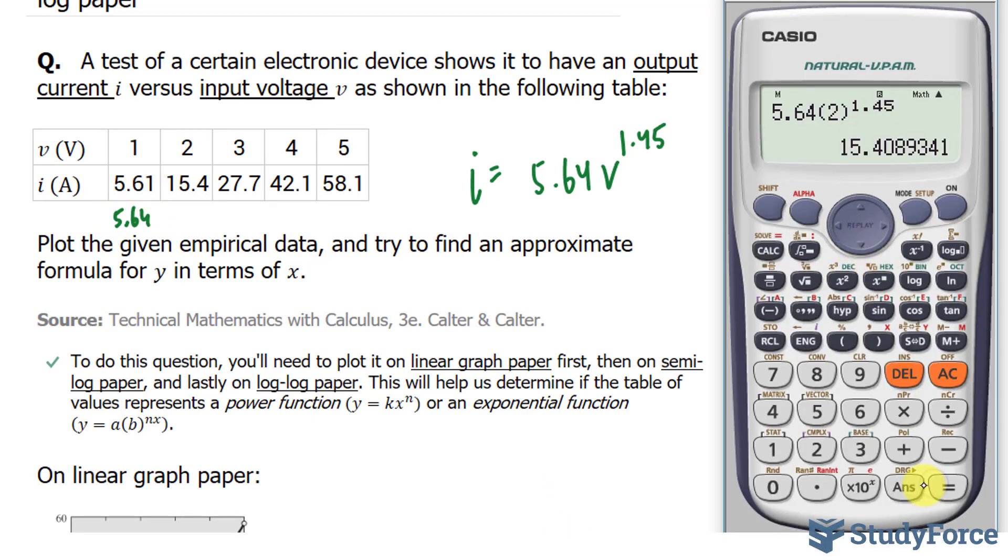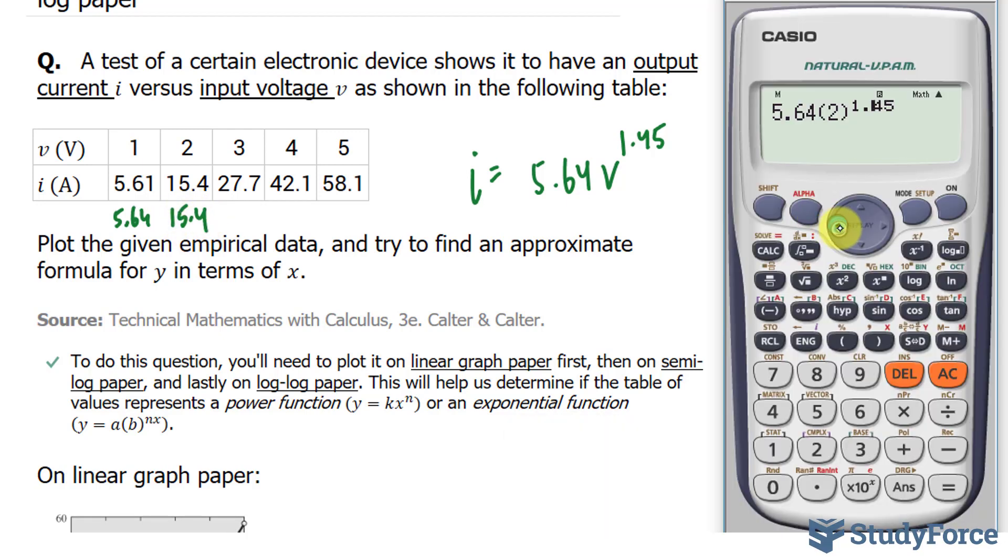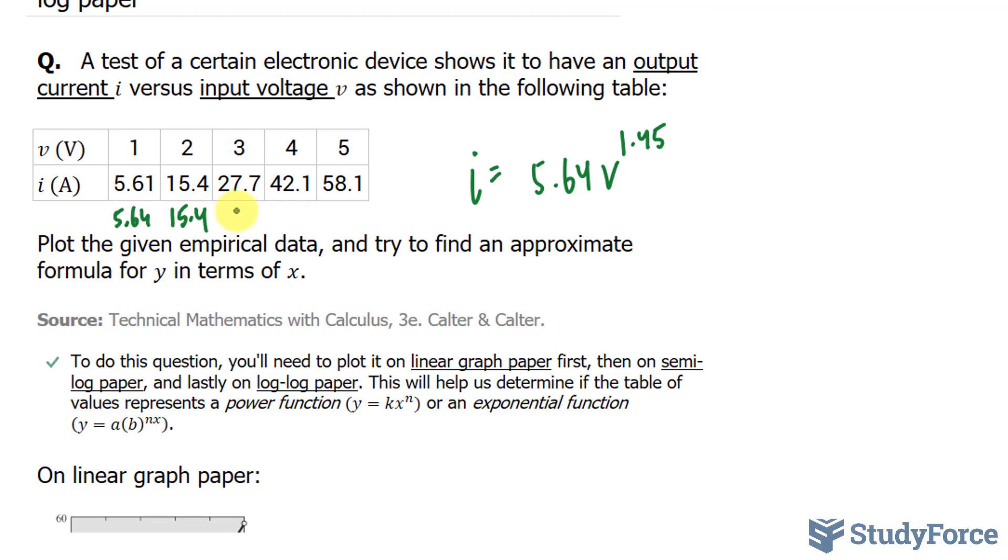Let's try 2. I end up with 15.4. That's very similar. When we try 3, we end up with 27.7. Not too bad. And I can assume that for 4 and 5, they're very similar as well.